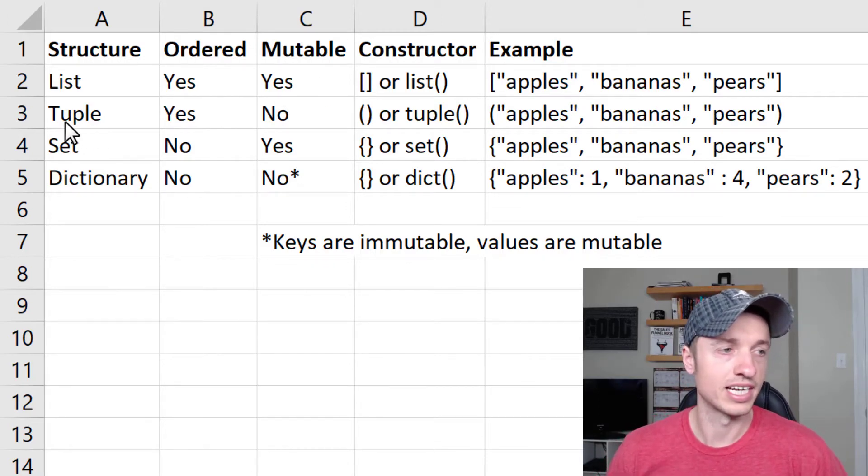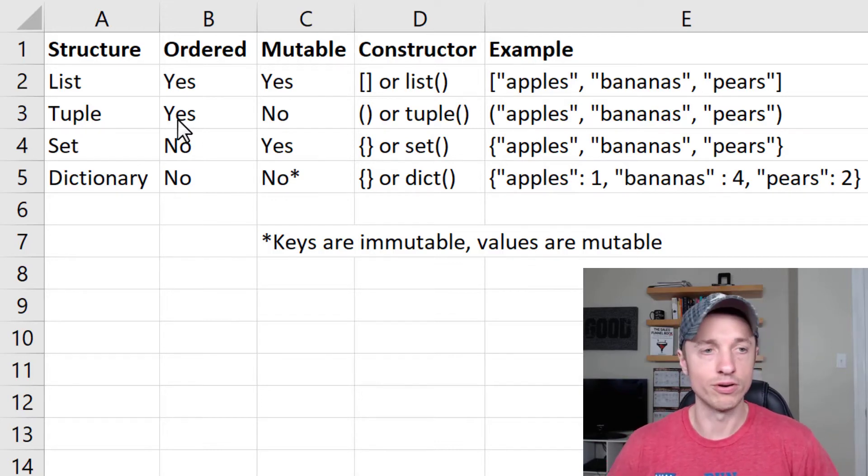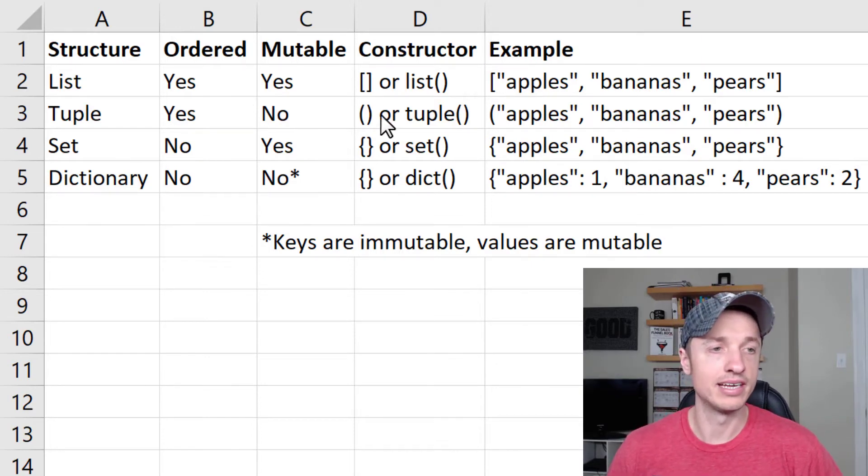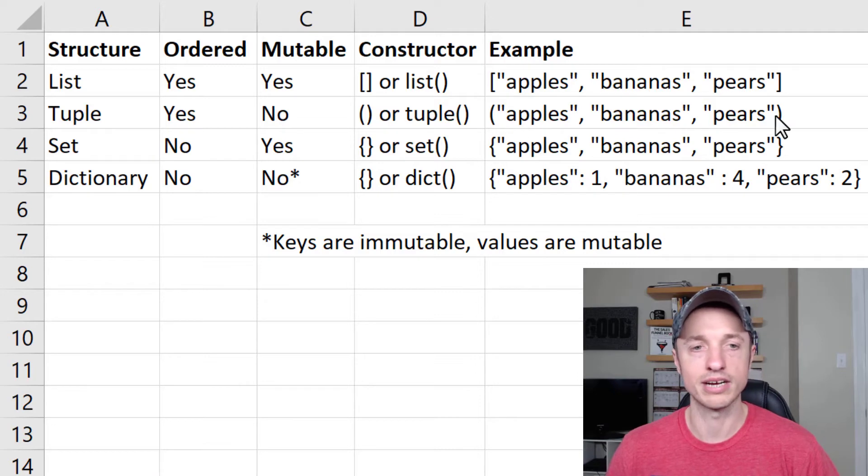The next structure we're going to talk about are tuples. They're ordered, so they are in an order, but they are immutable, which means you can't change the items in a tuple. The items in a tuple are the items. You can't change the items out. And then to use the constructor for tuples, there's the parentheses, or we could use the tuple constructor. This is essentially what a tuple looks like when broken down.